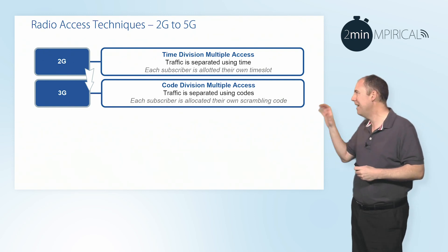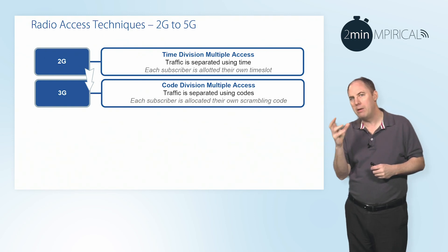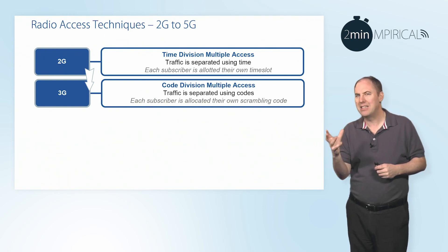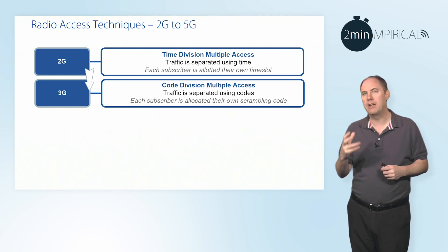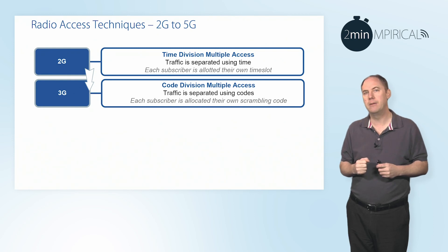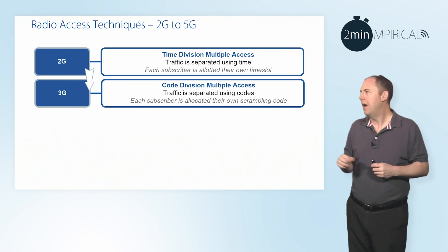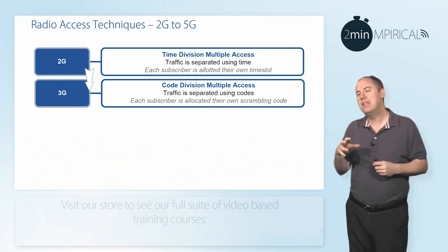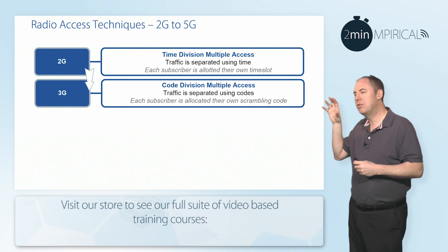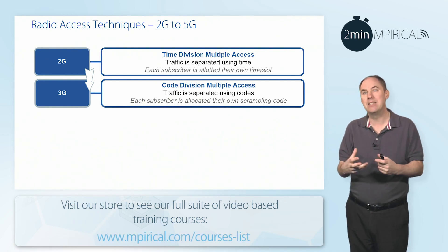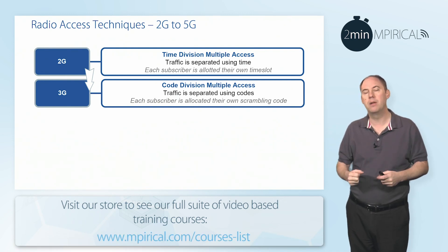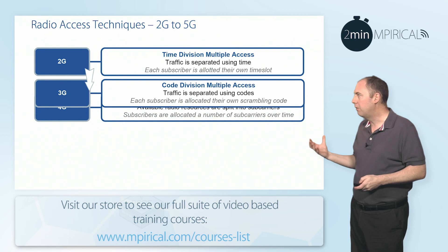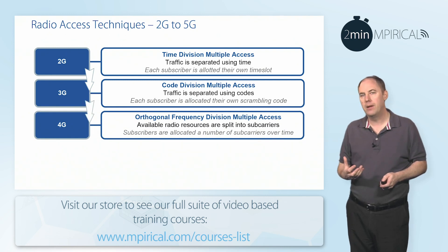The idea is we could identify cells and identify users using this CDMA-based technique. The reason we did that was mainly because it was, at the time, the best system that we could come up with. We then evolved into 4G.